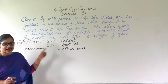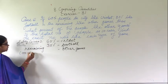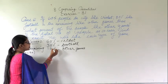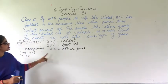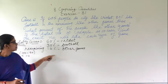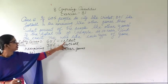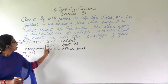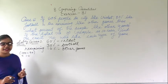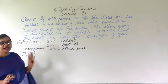60 plus 30 is 90, so 100 minus 90 is 10. Therefore 10% will be the people who like other games. So 60% like cricket, 30% like football, and the remaining 10% like other games — overall 100% is accounted for. From here I have taken out the percentage for cricket, football, and other games.